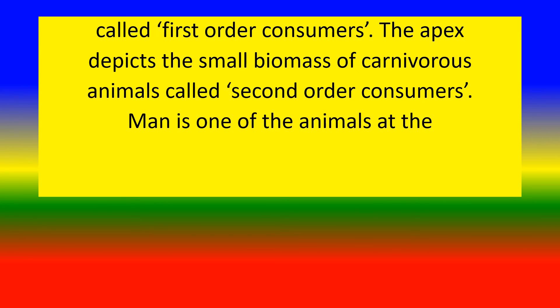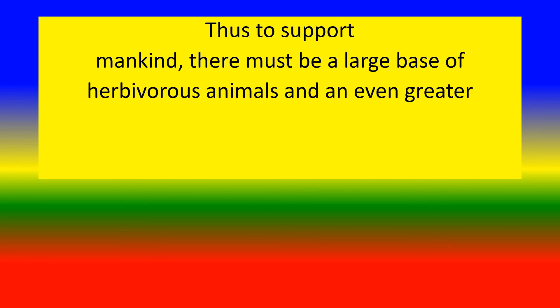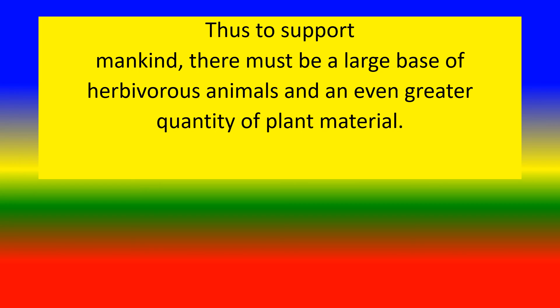Man is one of the animals at the apex of the pyramid, and thus all lower levels of the ecosystem support mankind. There must be a large base of herbivorous animals and an even greater quantity of plant material.